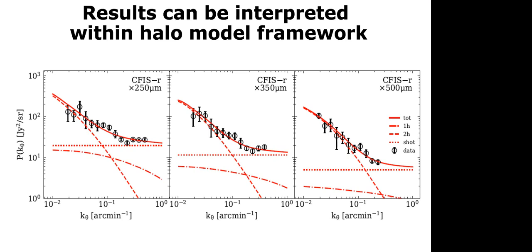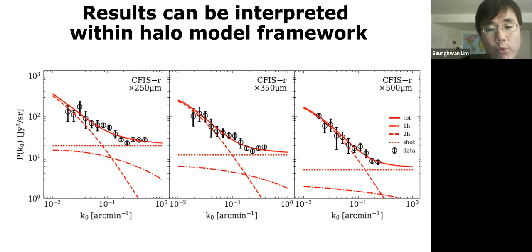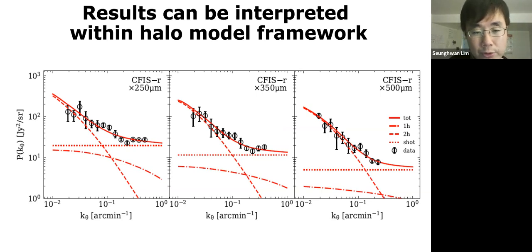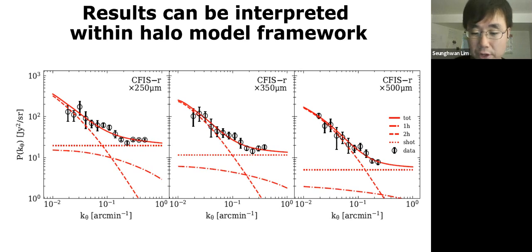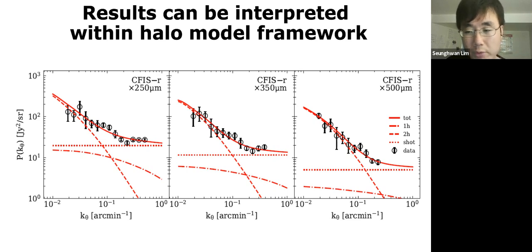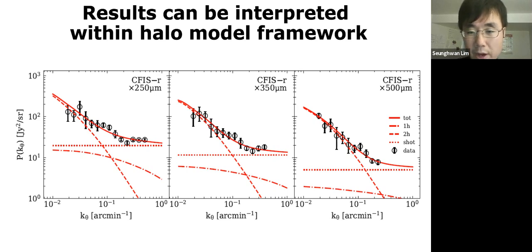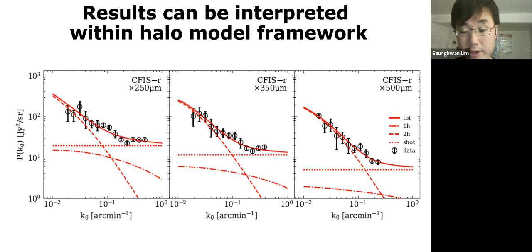A question was raised about the distinction between the one-halo term and the shot noise. The one-halo term is essentially the cross-correlation between galaxies within the same halo, while the shot noise is the auto-correlation of each individual galaxy — it just depends on number density rather than any distribution within the same halo. Yes, the shot noise is subtracted from the one-halo term.